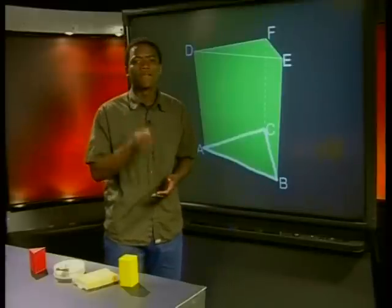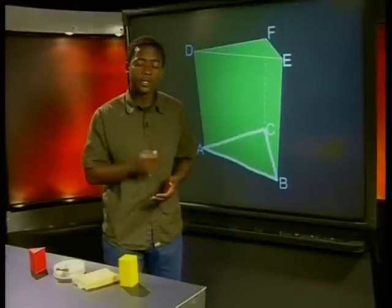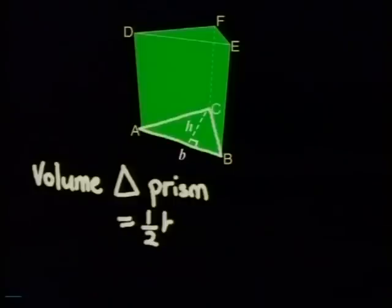In other words, the formula for the volume of a right triangular prism will be the area of the triangle, which is equal to half the base times height, multiplied by our perpendicular height.